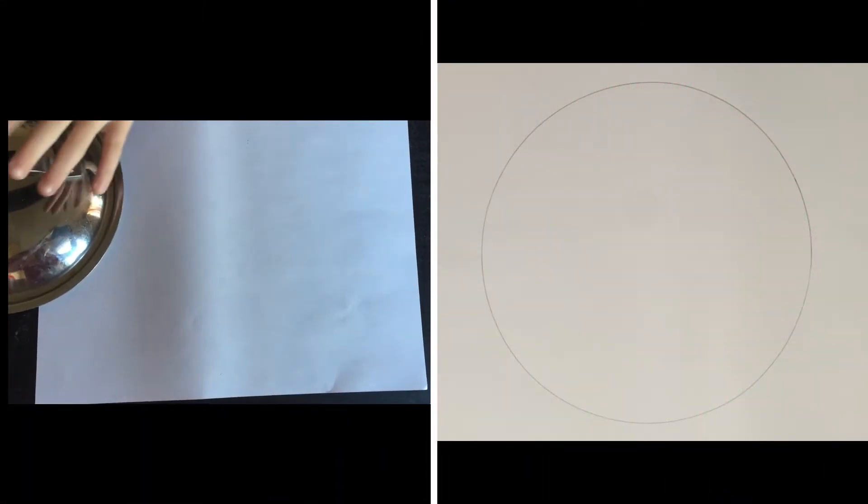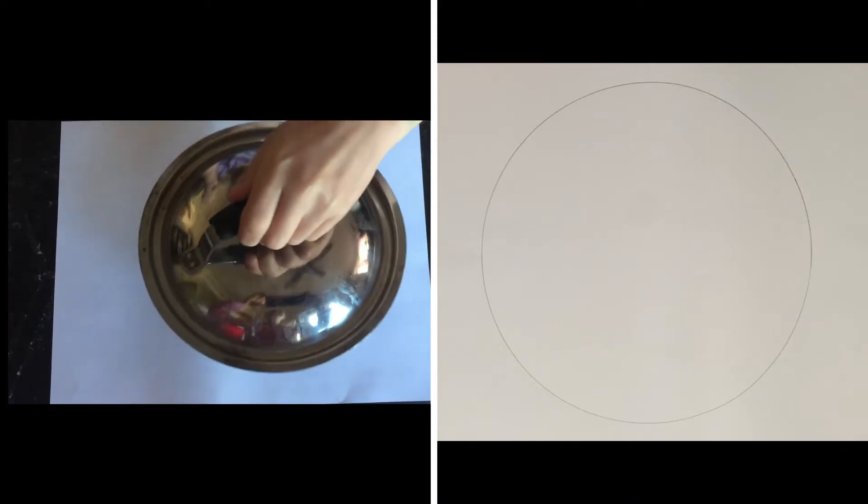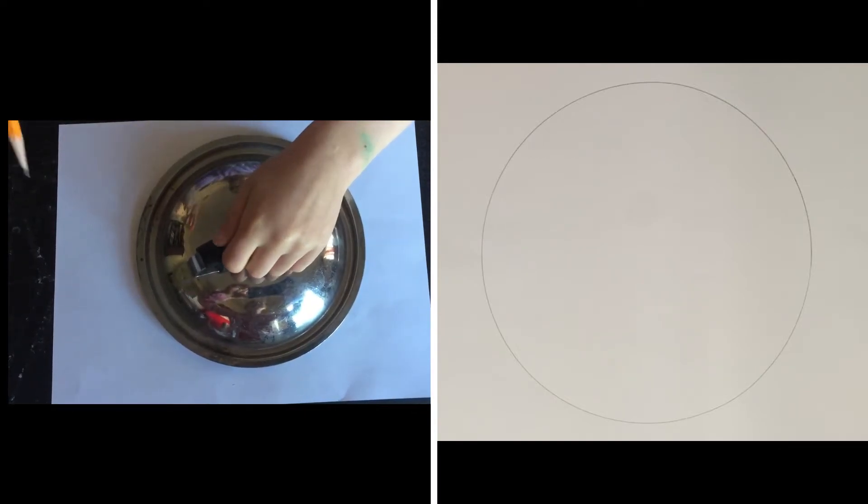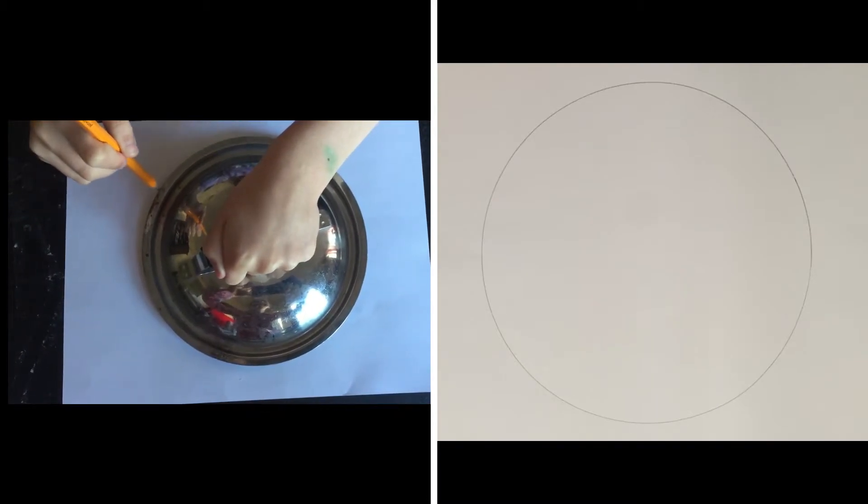So the first thing to make our elephant is to take the lid and put it in the middle, and with our pencil upright, trace all around the edges.